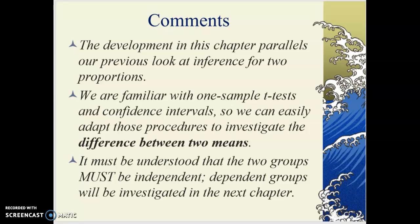In this chapter, we're going to parallel our previous look at inference for two proportions. We're already familiar with the one-sample t-test and one-sample confidence intervals, and we're basically going to build on and adapt those to look at the difference between two means. Keep in mind that we're comparing a difference — one mean subtracted from another. Sometimes you'll get negative values, so make sure you're aware of which direction you're doing the subtraction so that your results have the correct direction.